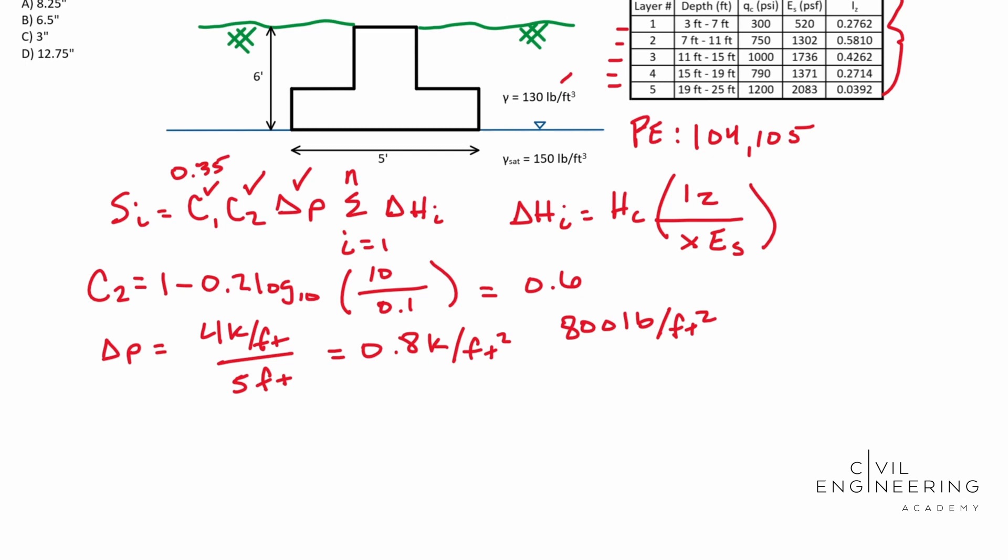For HI1, I'm going to write HI and then I'm going to write a number one. So this is the first layer. We know it's four feet thick. The reason we say it's four feet thick is because it says from three to seven. So that's four feet thick. We're going to multiply that by our IZ, which is given in our problem, 0.2762. And then we're going to divide that by our X.